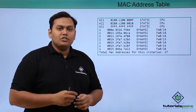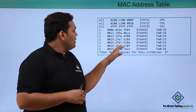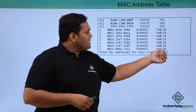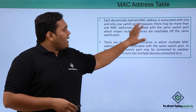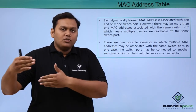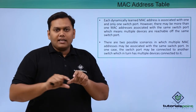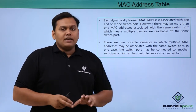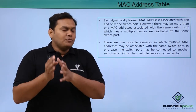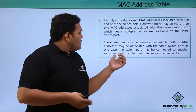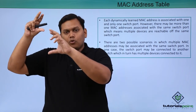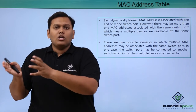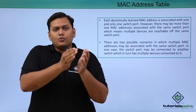The interfaces connected to the switch port show all total MAC addresses - 27 in number. VLAN 1 is connected, and you can see the MAC address type is dynamic, along with the interfaces connected. Dynamically learned MAC addresses are associated with one switch port. If you see multiple MAC addresses associated with the same switch port, this means that switch port may be connected to another switch which in turn has multiple devices connected to it.